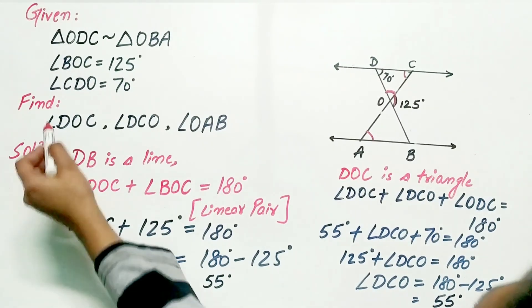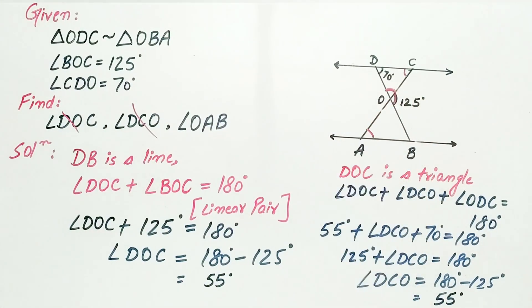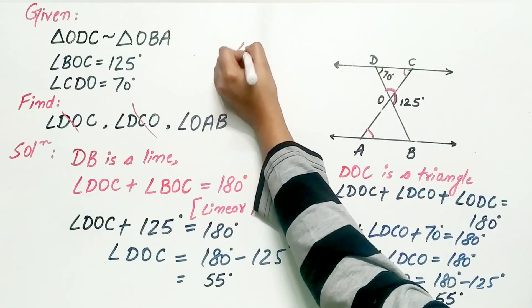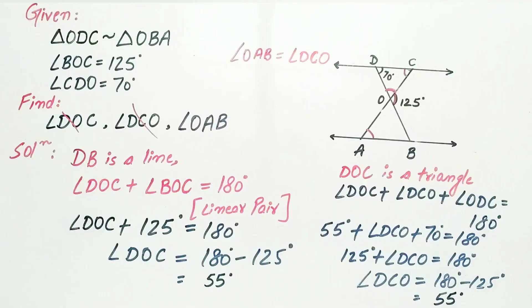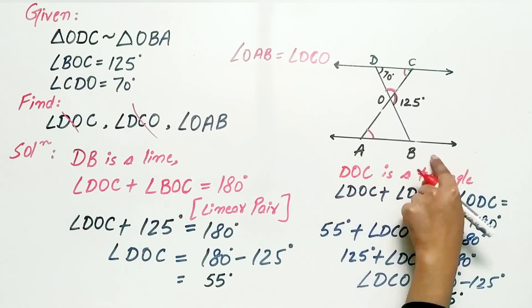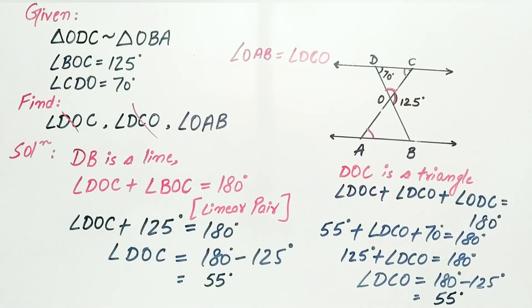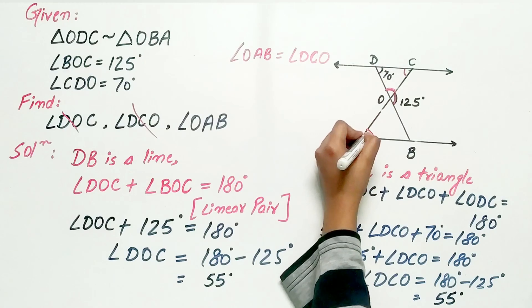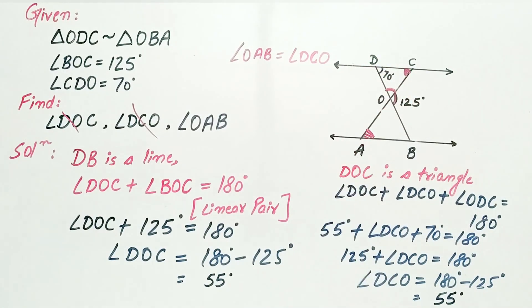Now, we have to find out angle DOC, angle DCO, now angle OAB is equal to angle DCO. Why? We cannot use alternate interior angles to find out angle OAB, because AB is not parallel to DC, it is not given in the question. So, OAB is equal to DCO, why? Think.